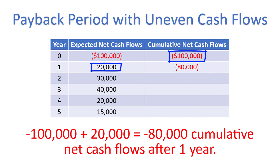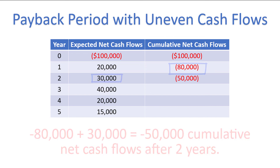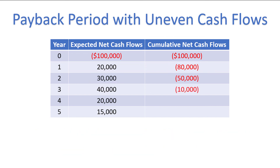Continuing with the same process, the year 2 cumulative net cash flows are negative $50,000, found by taking negative $80,000 and adding $30,000. Then, following the same process, we have negative $10,000, positive $10,000, and positive $25,000 for the final 3 years.